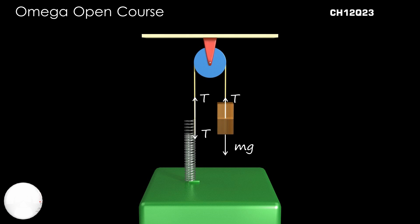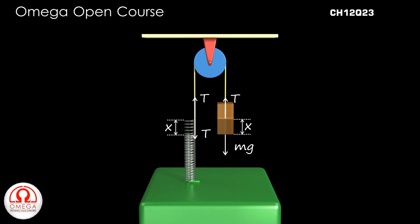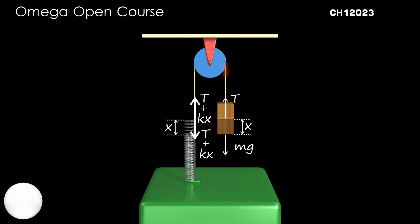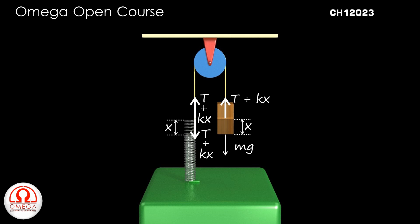When the block is at distance x from its equilibrium position, the spring elongates further by x. Therefore, the spring force increases by kx. Since the spring force has to be equal to the tension in the string, the tension in the string also increases by kx. Thus, the upward force acting on the block is increased by kx.